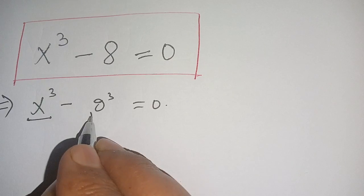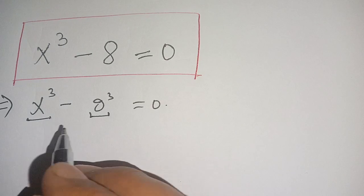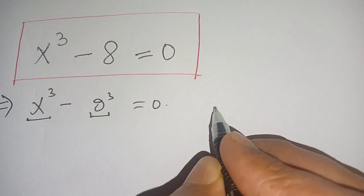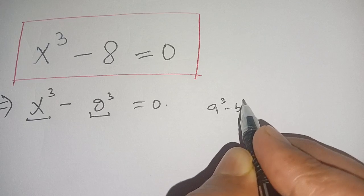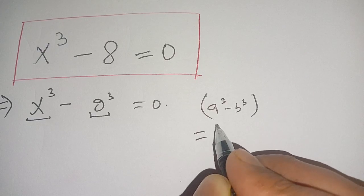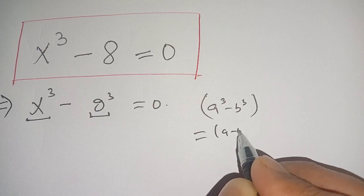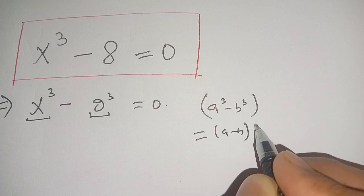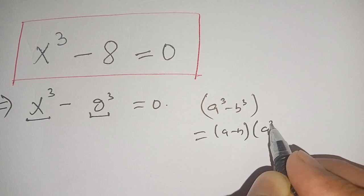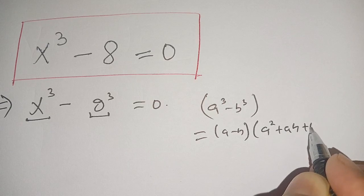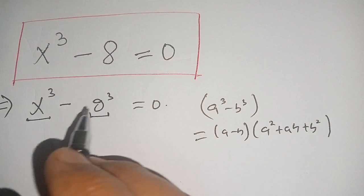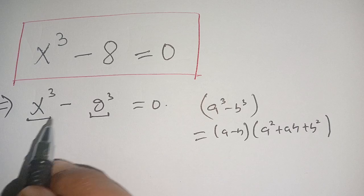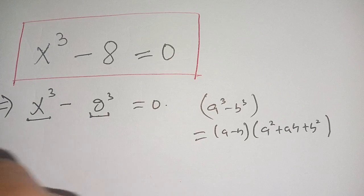Now you see that here we have a cubed minus b cubed. We know that a cubed minus b cubed is equal to (a minus b) times (a squared plus ab plus b squared). Here a is x and b is 2.